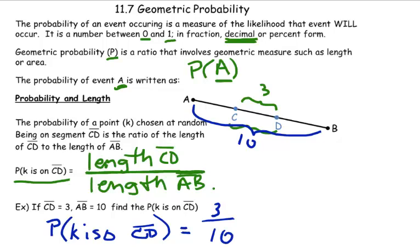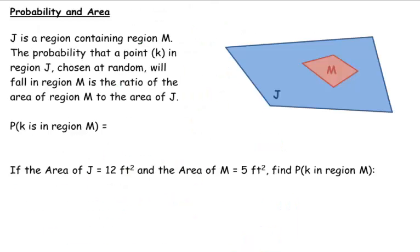And so we're gonna do that fraction and do the division, 3 divided by 10. And that's gonna give me 0.3. And so that would be my probability. Probability is 0.3, the probability that P is on CD.